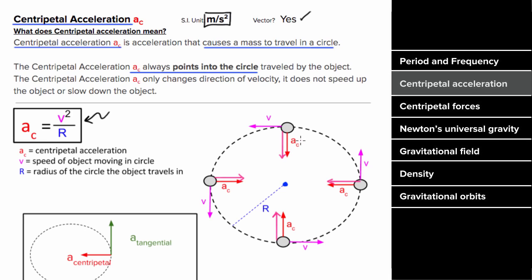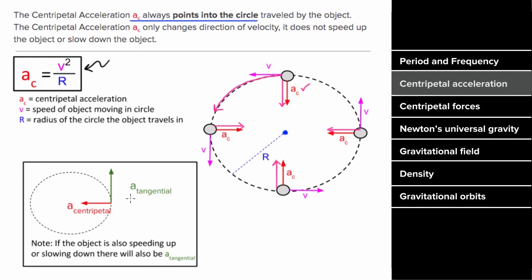Centripetal acceleration does not cause the object to speed up or slow down — it only changes the direction of the velocity. If the object going in the circle is also speeding up or slowing down, there must also be a component of acceleration that's tangential to the circle. A tangential component in the direction of velocity means the object is speeding up; opposite to velocity means it's slowing down. So centripetal acceleration changes the direction of the velocity, while tangential acceleration changes its magnitude.